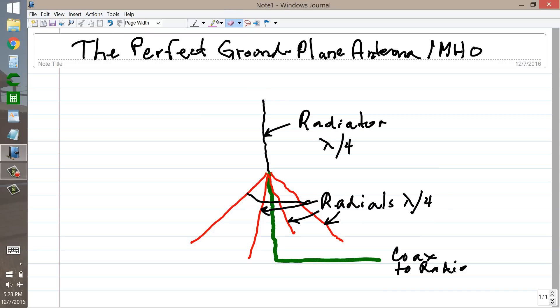We have a radiating element, a quarter of a wavelength long, connected to the center conductor of a length of coaxial cable that leads to the radio. The braid or the outer conductor of the coaxial cable goes to three or four radial wires,